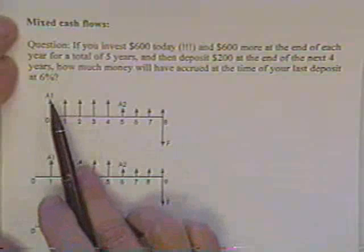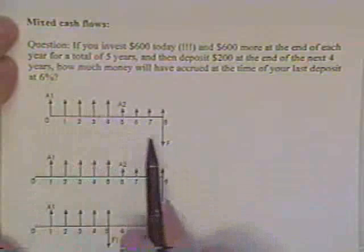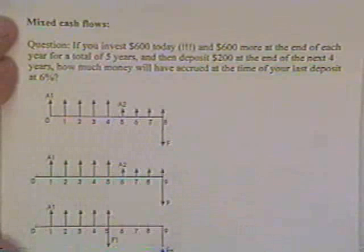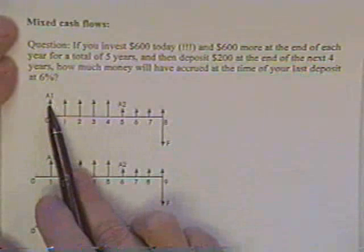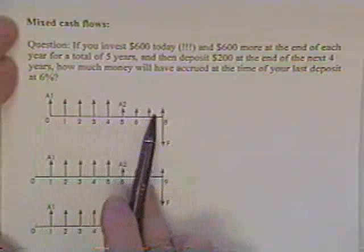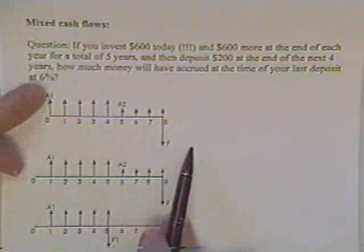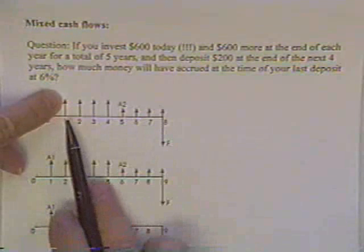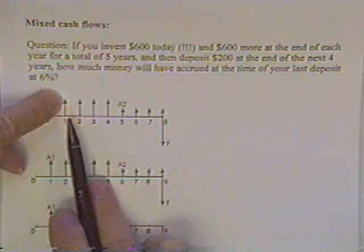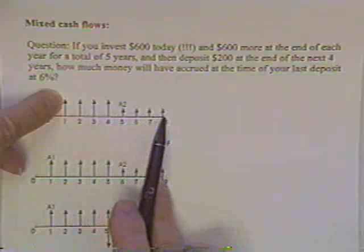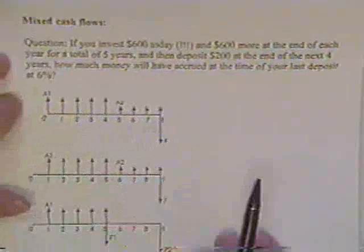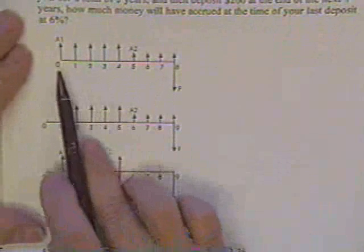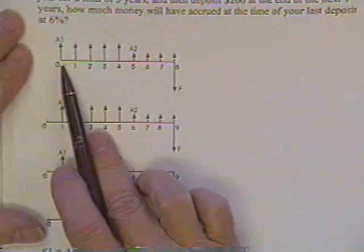Now one way you can do this is you just bring this forward to here, bring that forward to there. You can do that, and if there's not too many years involved you might just want to do that. You just multiply this times (1+i) to the one, two, three, four, five, six, seven, to the eighth power and write down how much money the first payment is worth. Then go to the next one, take its value and multiply it times (1+i) raised to the seventh power because you're going to carry it forward seven years. Add them up and that would be one way to do that.